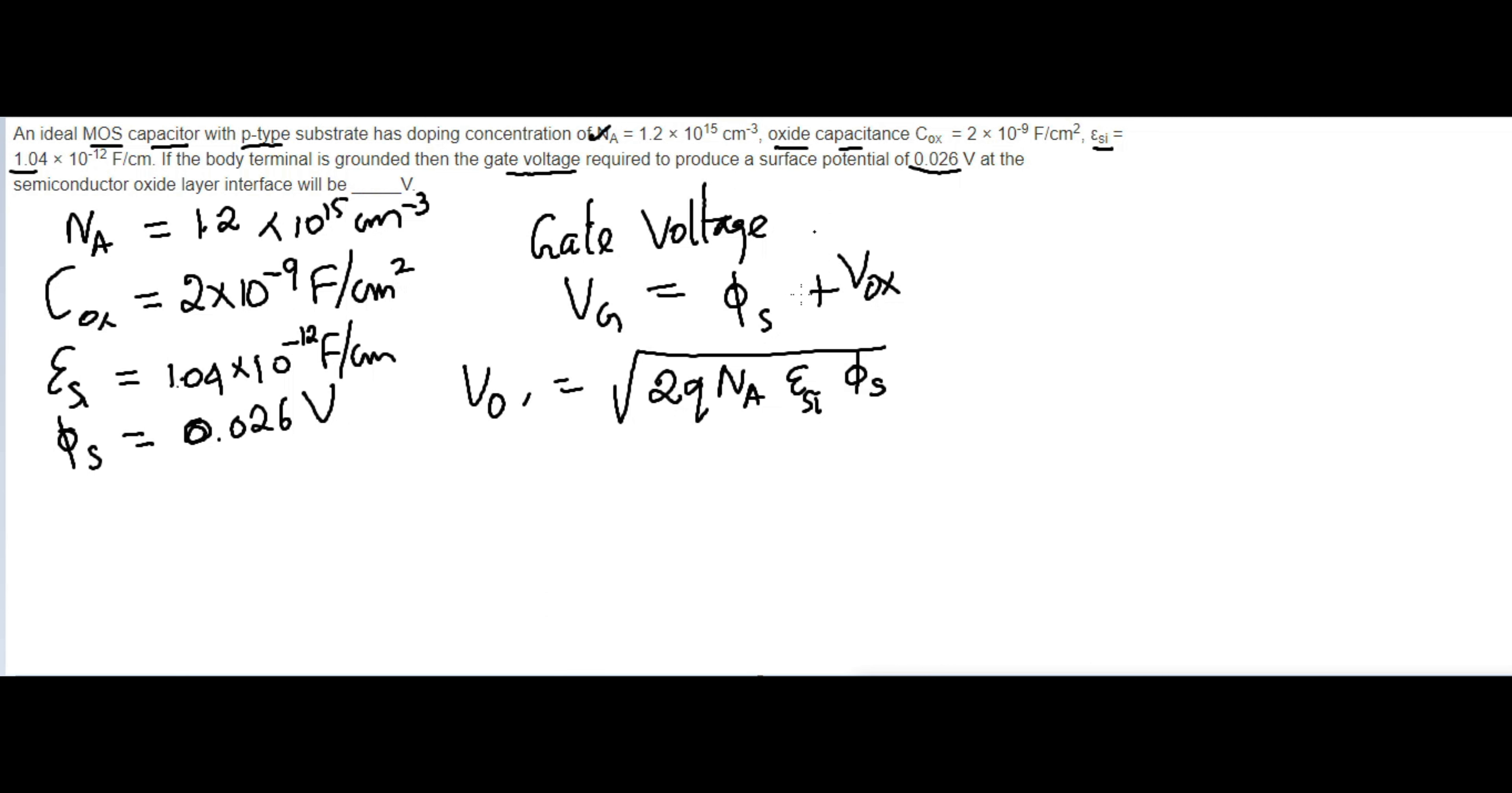I can now substitute all the terms. We have 2 × 1.6 × 10^-19 (the charge) × NA which is 1.2 × 10^15 × epsilon_si which is 1.04 × 10^-12...